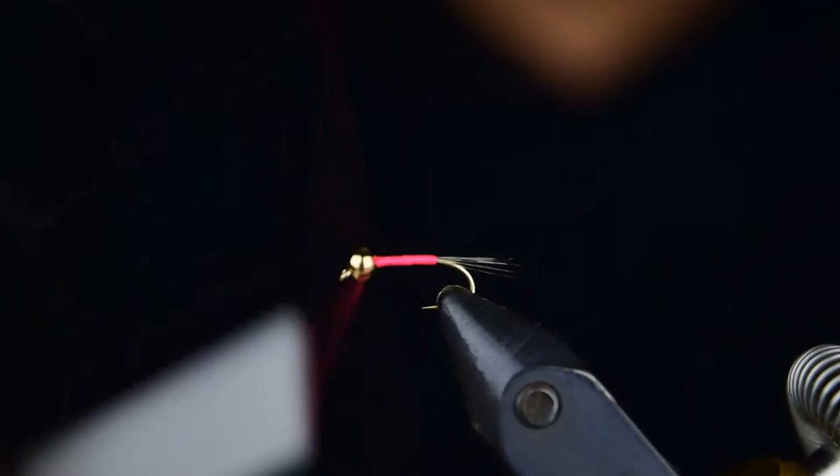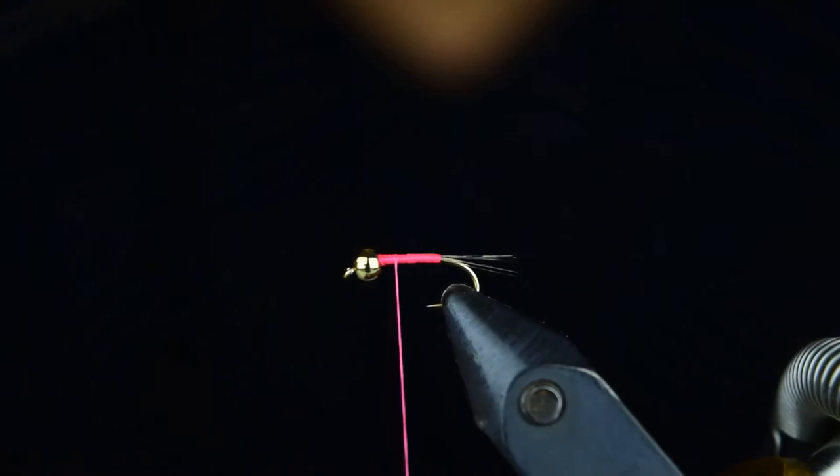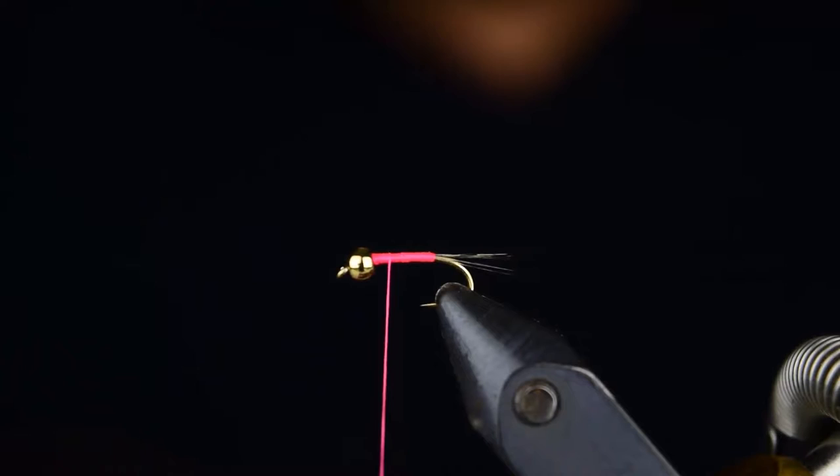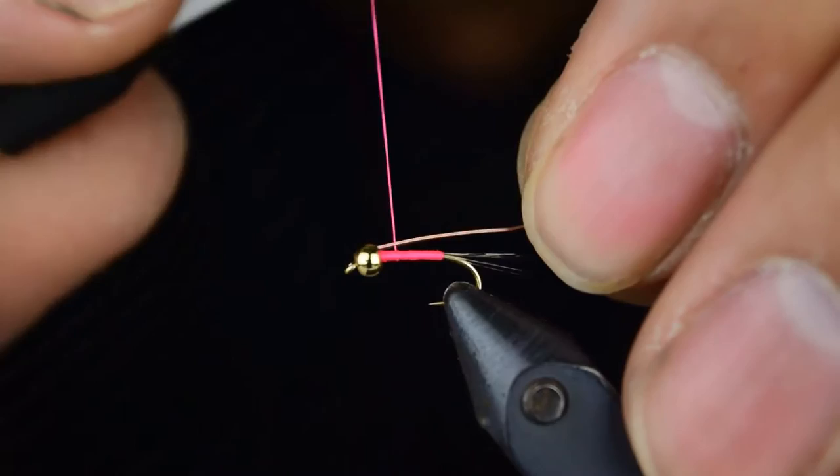Next we're going to get our wire here. This is UTC small size wire. We're going to go ahead and cut off about a four inch strip here, which is plenty. You can probably tie a couple flies with it. Then we're going to tie this in on our side of the hook. We'll tuck it right behind the bead and we'll wrap it back.